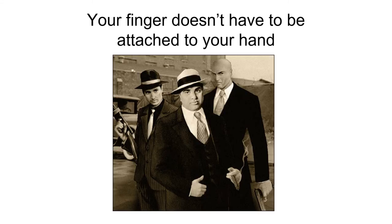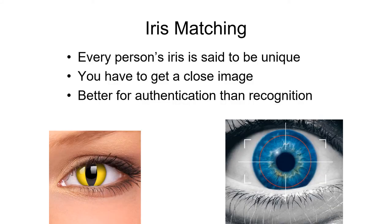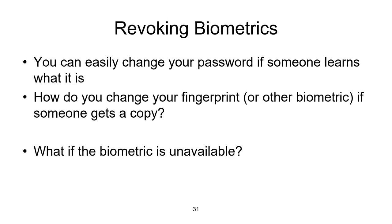Remember, your finger doesn't have to be attached to your hand. The iris portion of your eye is said to be unique for every person. If you can get a close-up picture of the iris and match it up, you can tell if this person is likely to be who they claim to be. This works much better for authentication than recognition. If somebody finds out your password, you can easily change it. But if somebody gets a copy of your fingerprints or another biometric, it can be very hard to change. And of course, what if that particular biometric is unavailable?